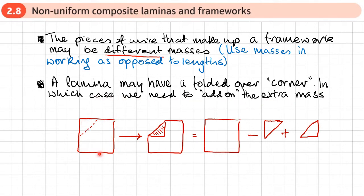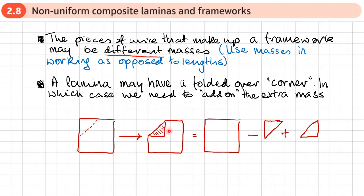Here's an example: imagine we've got a square lamina with a dotted line where we fold it, so that triangle now rests on top of the original lamina — it's still there but in a different position. The way we do the working is: find the mass and center of mass of the square, subtract the triangle piece that's now missing, then add it on in a different place. The center of mass that's subtracted gets added back in a different position, so they don't cancel out.